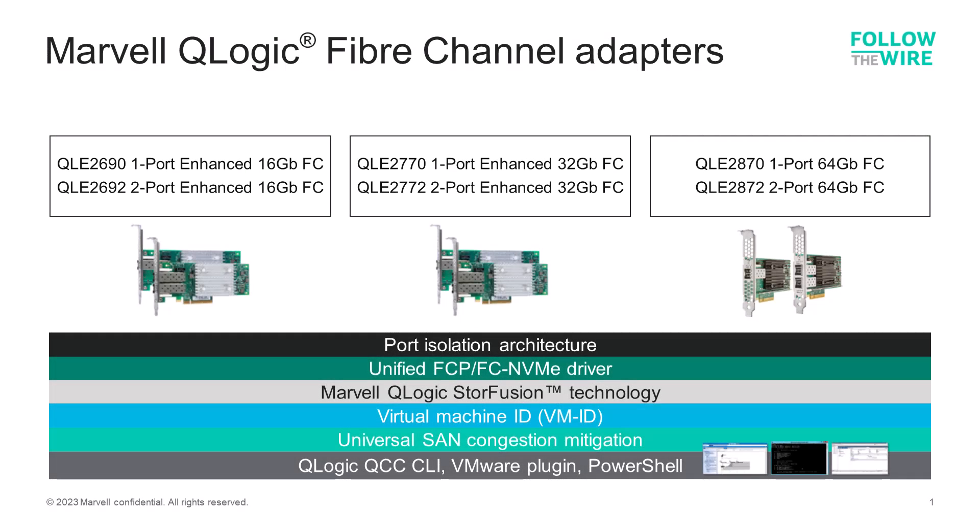For customers working in those mission-critical environments best suited for Fiber Channel, the best choice for host connectivity are the QLogic Fiber Channel HBAs from Marvell. Here's the portfolio: our 16 gigabit QLE 2690 series, our 32 gigabit QLE 2740 and 2770 series, and our 64 gigabit QLE 2870 series. These offer a variety of features we'll go over in later Follow the Wire sessions, including unique features like port isolation, Store Fusion, and virtual lane technology that deliver more predictable and reliable storage performance — supported with both Brocade and Cisco Fiber Channel SAN fabrics.